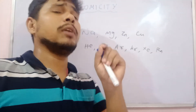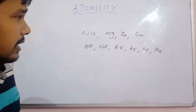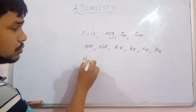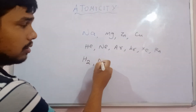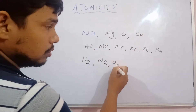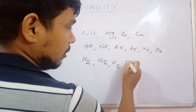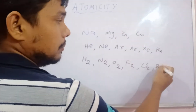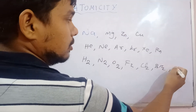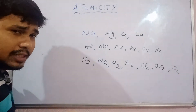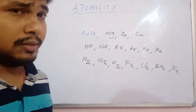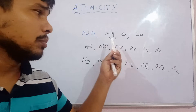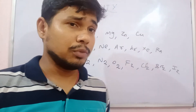Let's move to diatomic. H2, N2, O2, F2, Cl2, Br2, and I2 — these are the diatomic elements. These are the examples of diatomic.